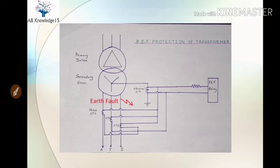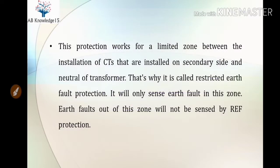The scheme of REF protection is shown here, and the earth fault that it senses is shown by the red arrow between the neutral and the secondary side of the transformer up to the secondary side panel. If any earth fault occurs between the neutral side and secondary side of the transformer, REF protection senses the earth fault and trips the circuit breaker, isolating the transformer. This protection works for a limited zone between the CTs installed on the secondary side and the neutral of the transformer.